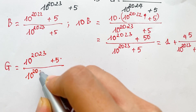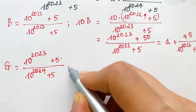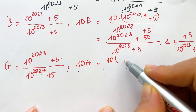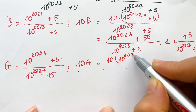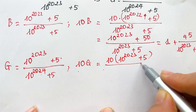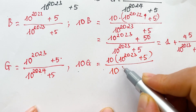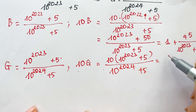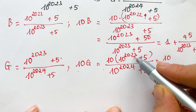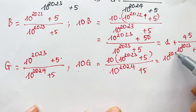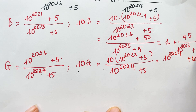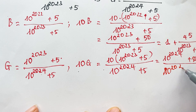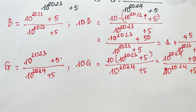And similarly G equals 10 power 2023 plus 5 over 10 power 2024 plus 5. So 10G equals 10 times 10 power 2023 plus 5 over 10 power 2024 plus 5, which equals 10 power 2024 plus 50 over 10 power 2024 plus 5.